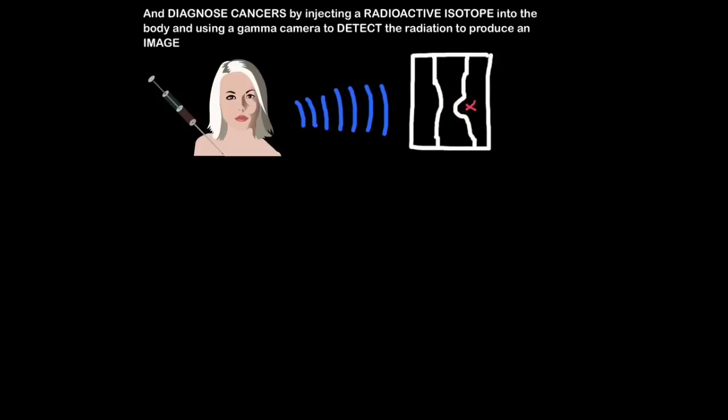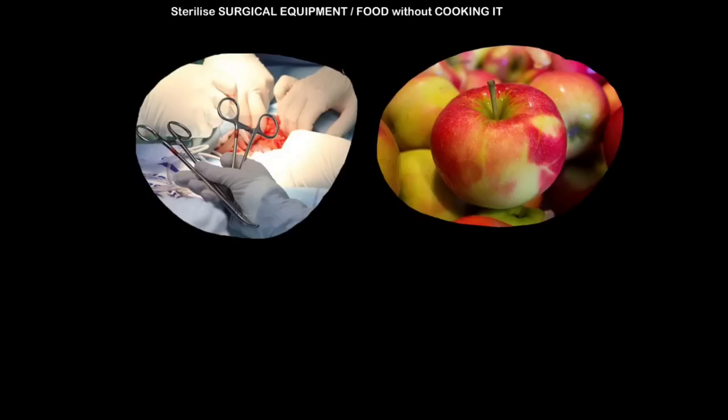We can also use gamma radiation to sterilise surgical equipment and food without cooking it. So obviously you have to ensure that surgical equipment is completely sterile, no bacteria, anything that can cause illness because you're invading bodies and basically you could easily cause infection if you didn't sterilise the equipment. So gamma very quickly obliterates all sorts of bacteria and harmful things on surgical equipment. Same for food, we don't want to eat lots of bacteria and the advantage of using gamma radiation to kill bacteria and so on on food is it doesn't cook it, it doesn't actually heat it up, it just kills the bacteria.